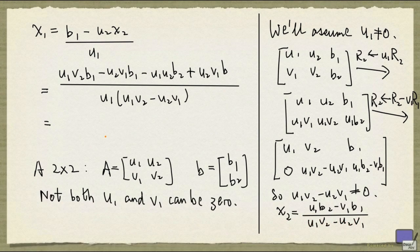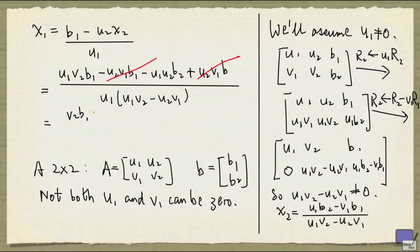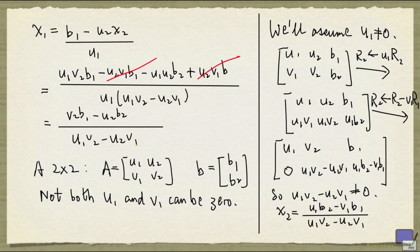And as you can see here, these two terms will give you 0. And then you're left with a factor of u1 in the numerator. So I can divide that out. And you're left with b1 v2 minus u2 b2 divided by u1 v2 minus u2 v1.